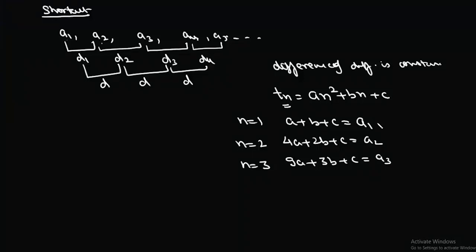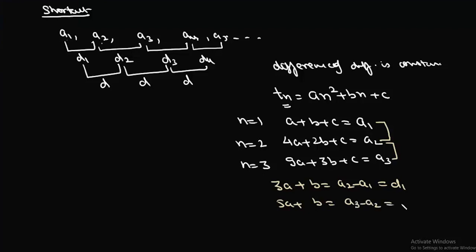Subtracting the first equation from the second gives 3a + b = a2 − a1 = d1. Subtracting the second from the third gives 5a + b = a3 − a2 = d2. Now we have equations in a and b. Subtracting the first from the second gives 2a = d2 − d1 = d.